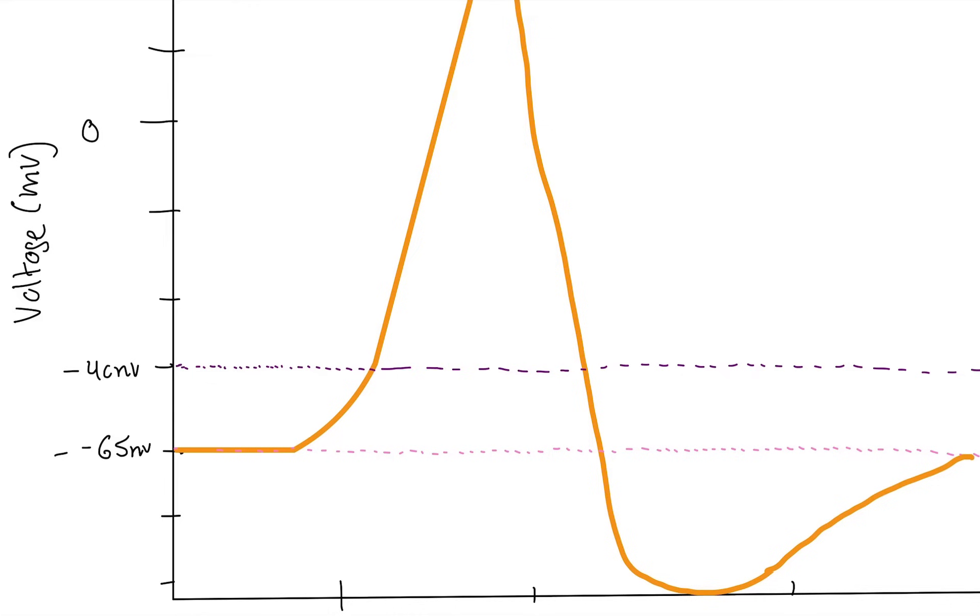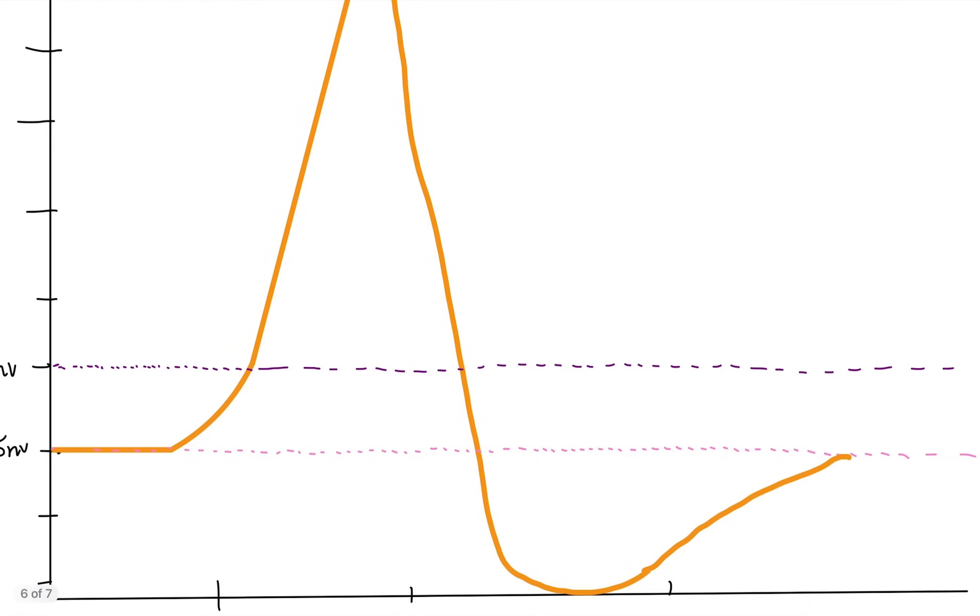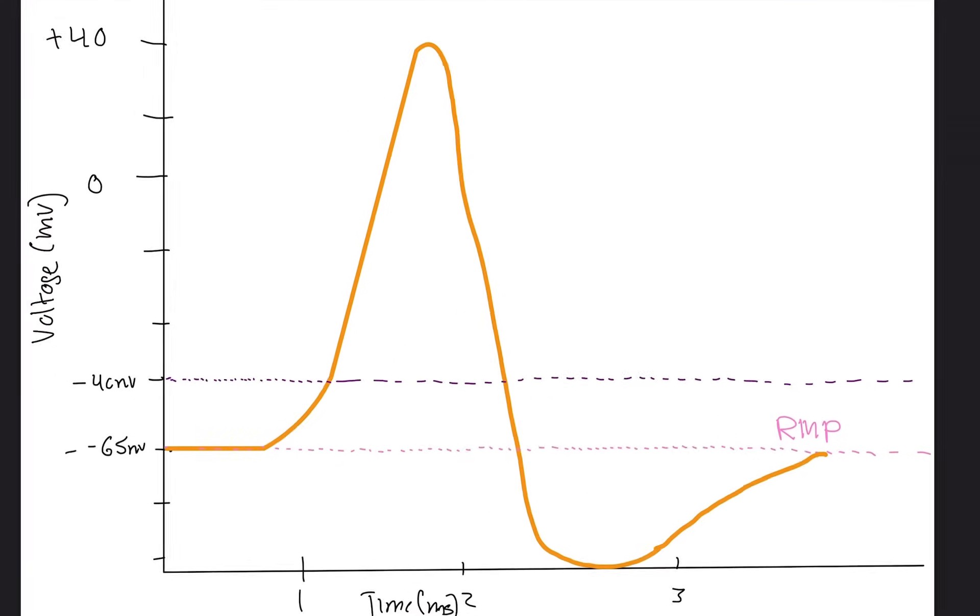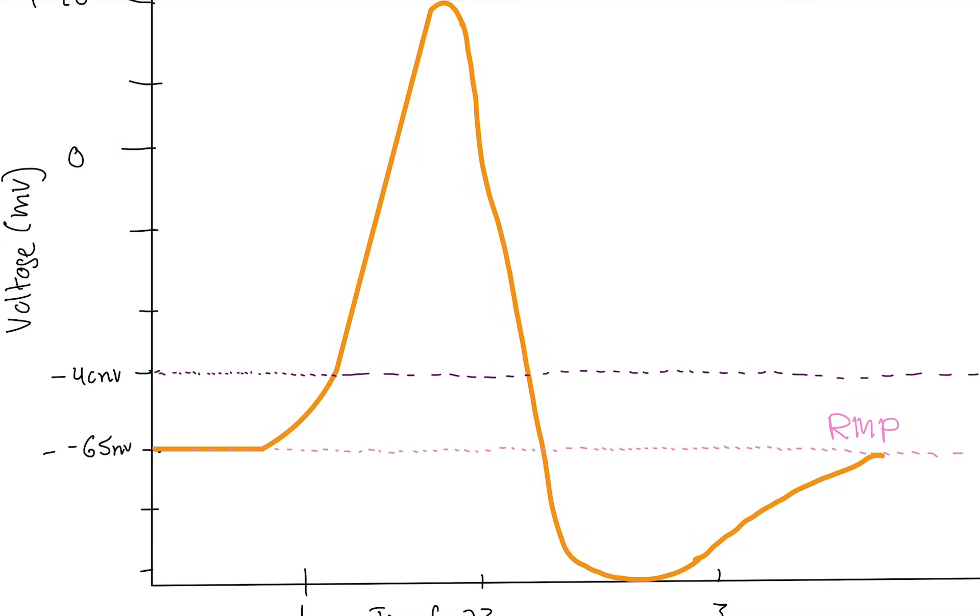So the first thing we're going to see right here is you see this pink dotted line? We're going to establish this as the resting membrane potential where the neuron is at rest at this voltage. So at negative 65 millivolts, the cell is at rest.